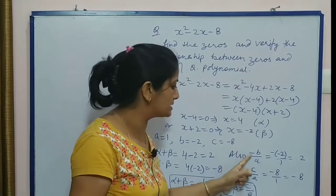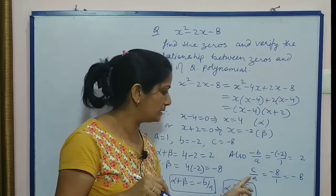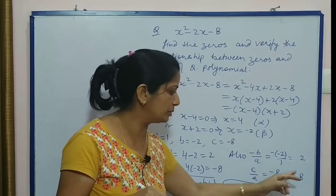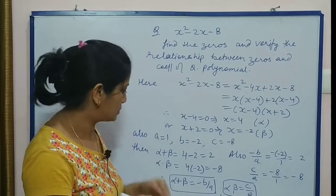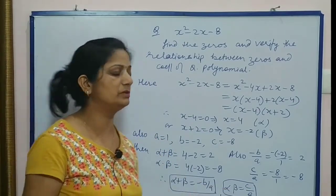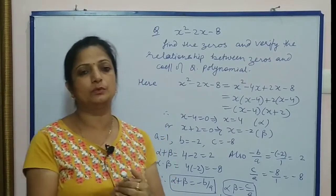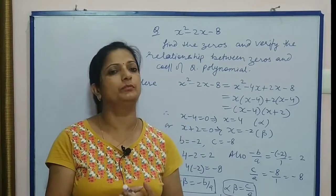Now we calculate -b/a: -(-2)/1, that is +2. c/a, that means -8/1, yani -8. So we say that α + β is -b/a and α × β is c/a. This is the relationship between zeros and coefficient of given polynomial.